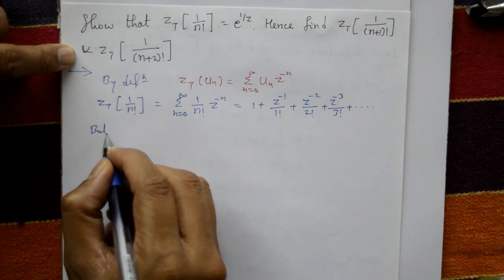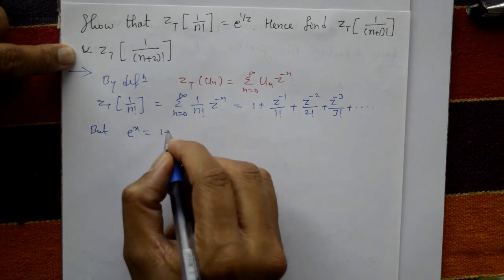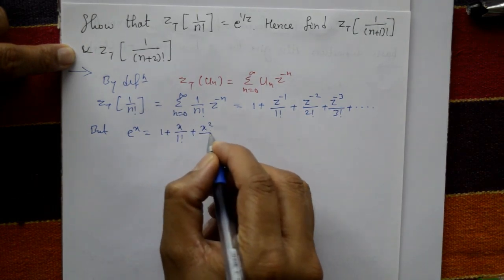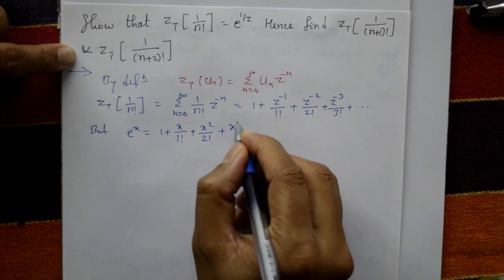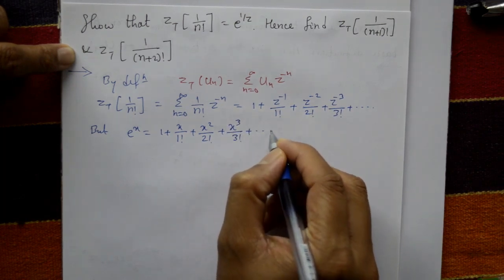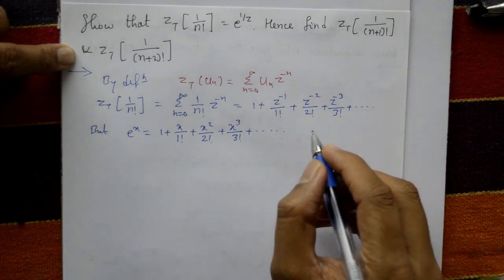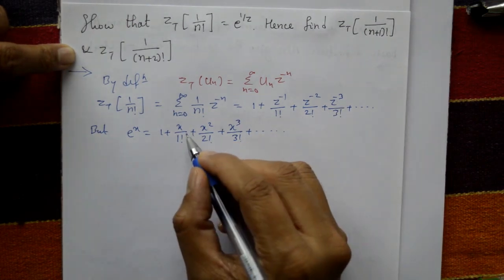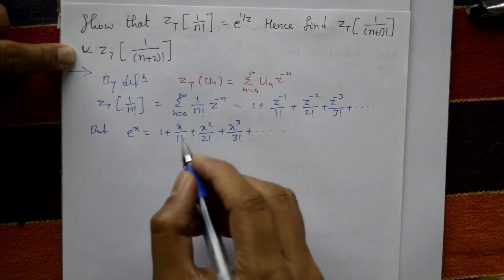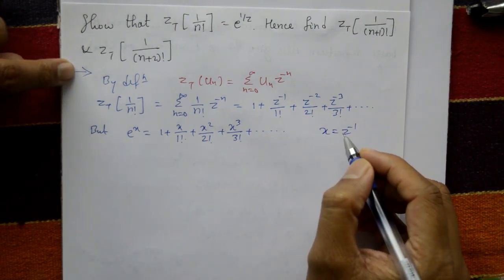But e to the power x is 1 plus x upon 1 factorial plus x squared upon 2 factorial plus x cubed upon 3 factorial, plus so on. Now compare: x equals Z to the minus 1.